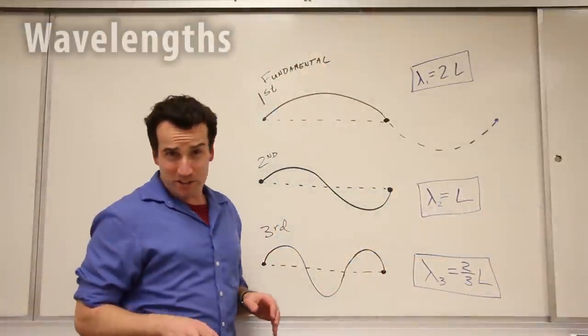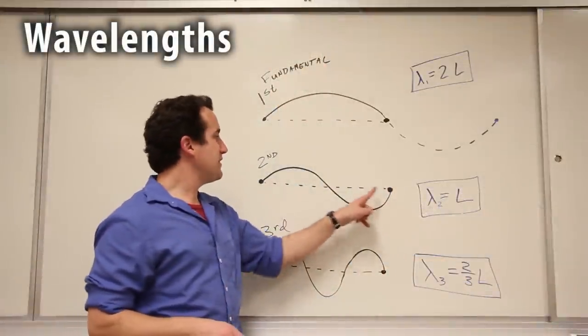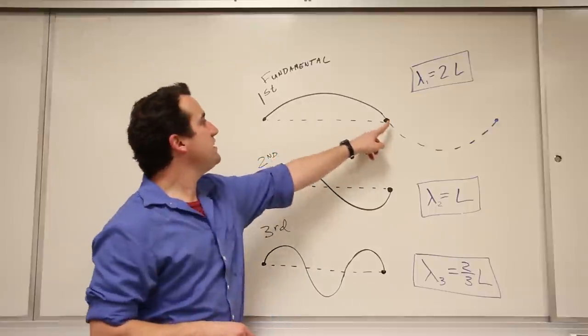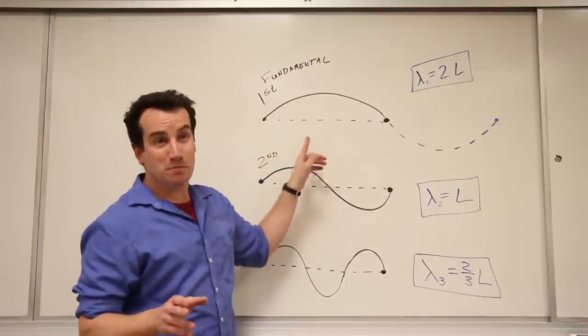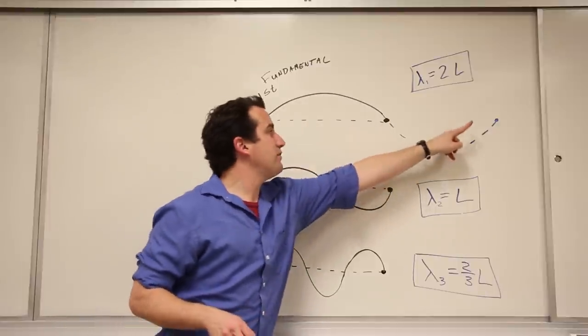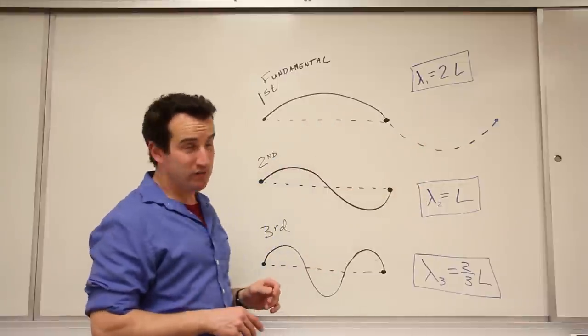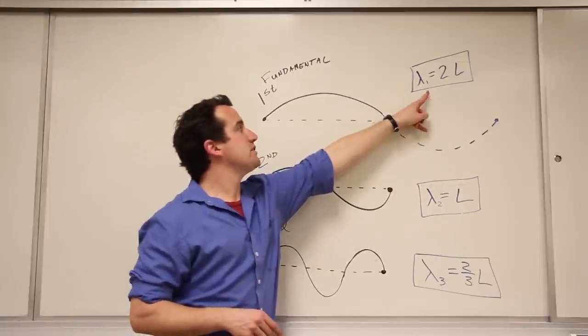The wavelength of the second harmonic is the same as the length of the string. But the fundamental vibration doesn't even fit on the string. We have to imagine the rest of the wave. One up and one down. Therefore, the wavelength of the fundamental is twice the length of the string.